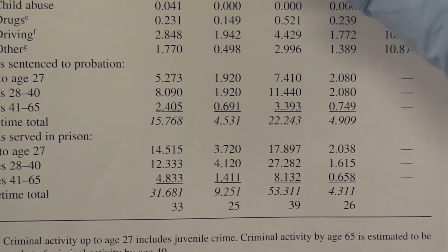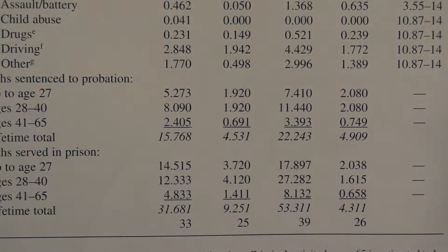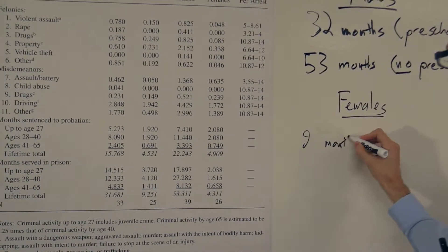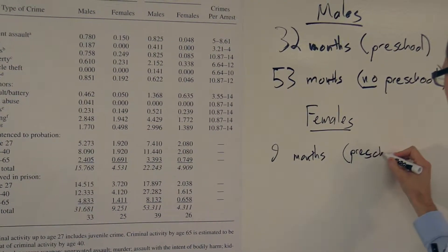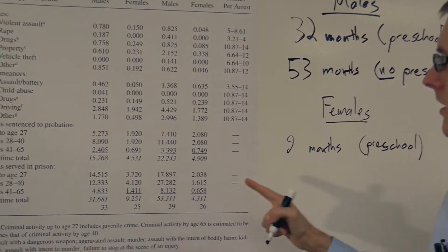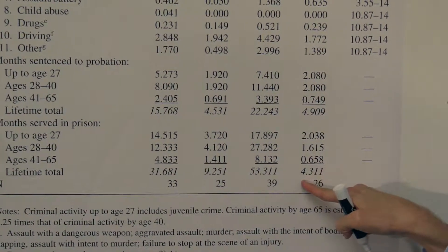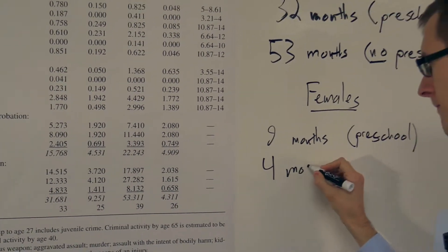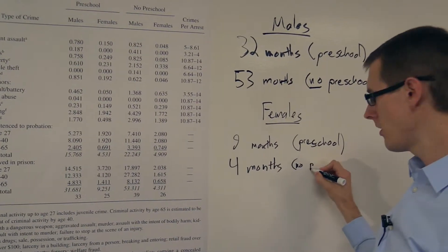Females who went to preschool got an average of 9.2 months in prison, so about nine months, and that's with preschool. Compare that to females who didn't get preschool. They got 4.3 months, so about four months, and that's no preschool.